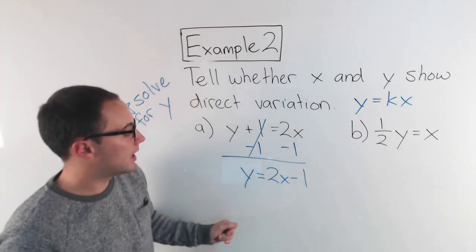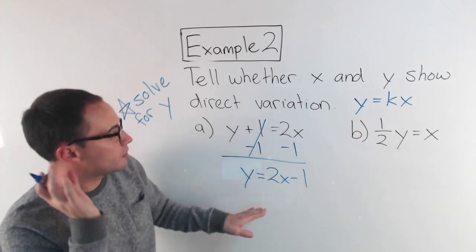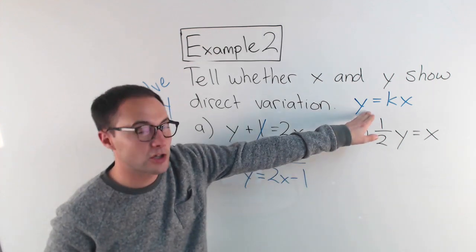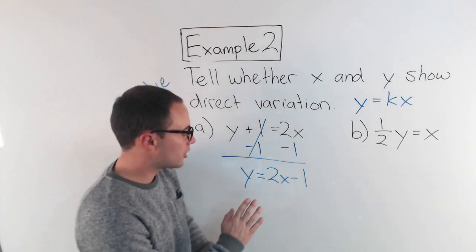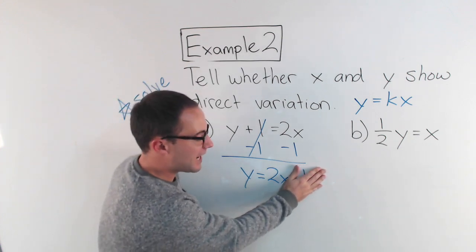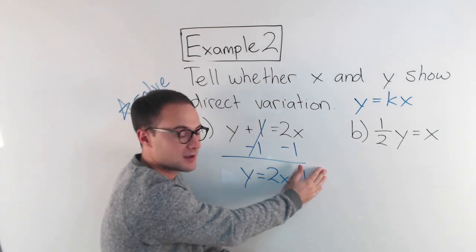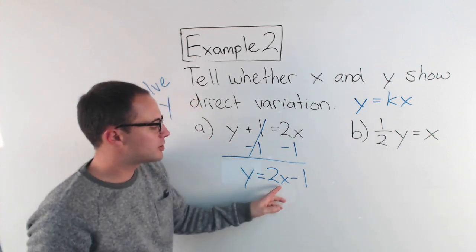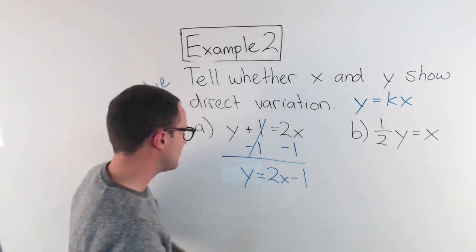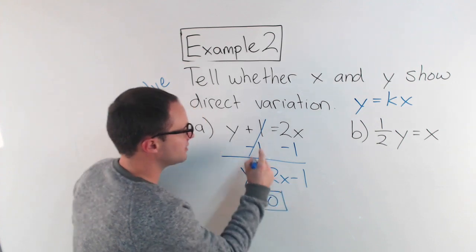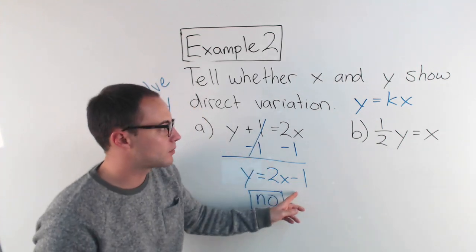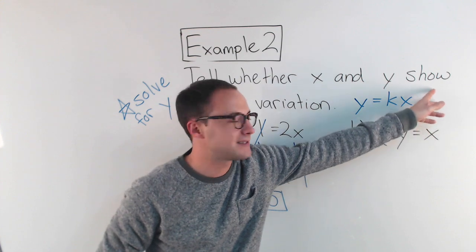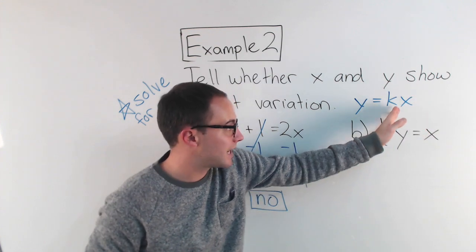So now, the question, does it show direct variation? Does it look like y equals kx? Almost. It almost does. If I didn't have that minus 1 there, it would. But because I have this 2x minus 1, no. x and y in this situation do not show direct variation because of this minus 1. Notice there's no minus anything here. It's just kx.